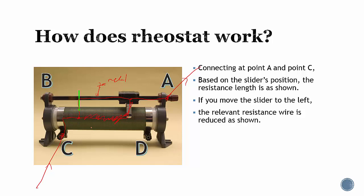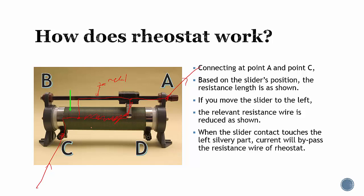When the slider connects to the left metal part, the current will bypass the entire resistance wire of the rheostat. The current will flow through here, touching here, and go all the way up here. This path is no longer available. The current bypasses the entire rheostat, so the resistance is considered zero.